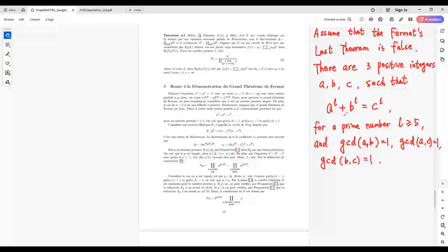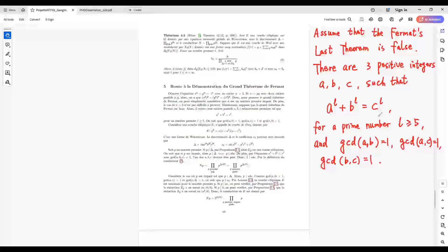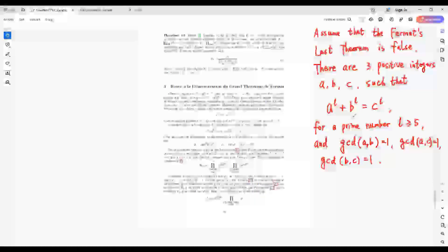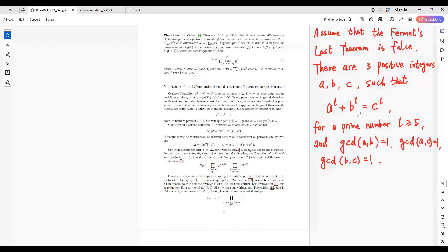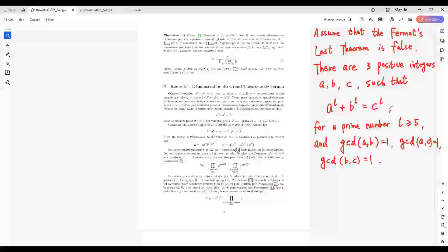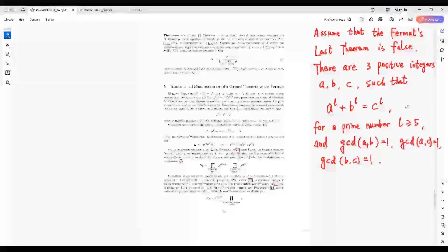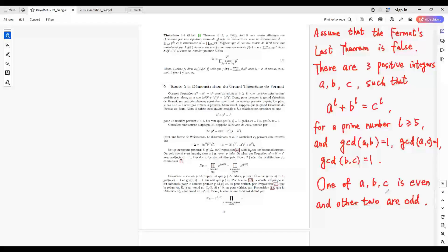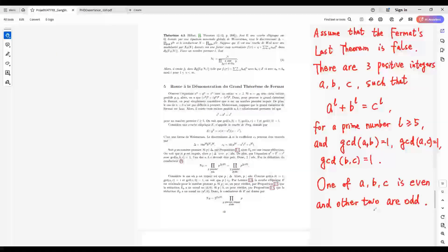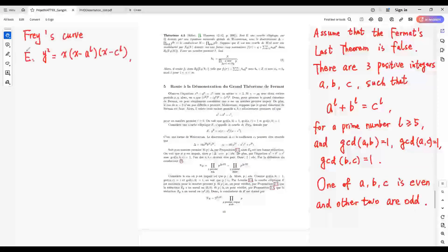If A and B are odd, then C must be even. If A and C are odd, C^L minus B^L would be even. We conclude that one of A, B, C is even and the other two are odd.